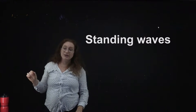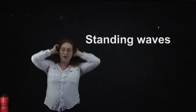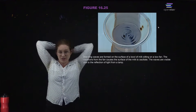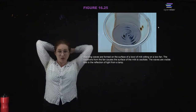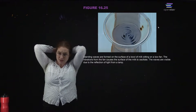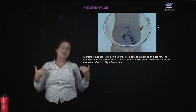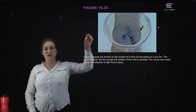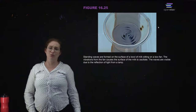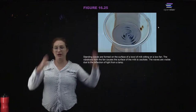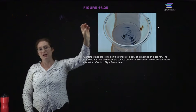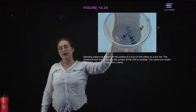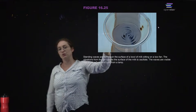Standing waves are what you actually have if you are plucking a string on a guitar. Standing waves happen when you get a form of resonance — the wave travels back and forth so that at least part of the wave acts constructively when it reflects at the boundaries, so you always have some displacement. Here you can see standing waves in a bowl of milk sitting on a fan, where the wavelength and wave speed make it so that reflections from the edge create constructive interference with the initial wave.